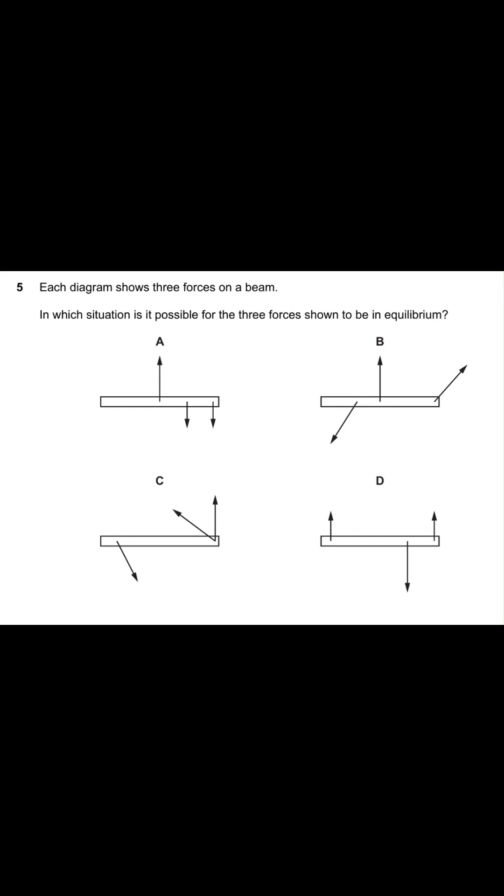In this question, each diagram shows three forces on a beam. In which situation is it possible for the three forces shown to be in equilibrium? What is equilibrium? When an object is said to be in equilibrium, no net force, no net moment.